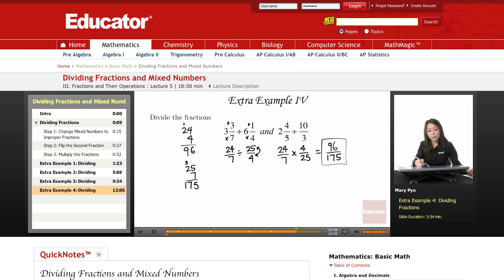The next example, 2 and 4 over 5 divided by 10 over 3. 10 over 3 is an improper fraction, so I can leave that as it is. This one, I have to convert, so 5 times 2 is 10, plus the 4 is 14. So 14 over 5, divided by 10 over 3.